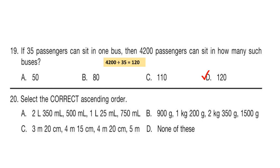Question 20: Select the correct ascending order. You have to find which option is ordered in ascending order. The correct answer is option C: 3 meter 20 centimeter is the shortest, then 4 meter 15 centimeter, then 4 meter 20 centimeter, and finally 5 meter. This is the correct ascending order.